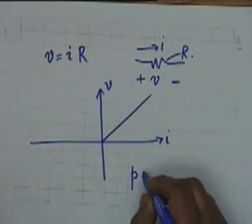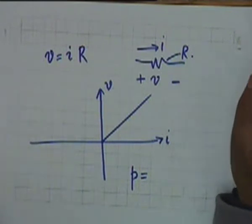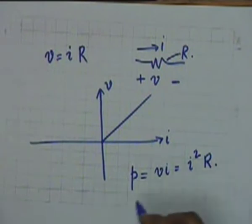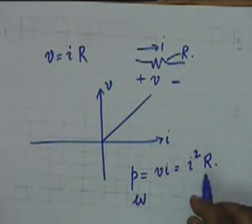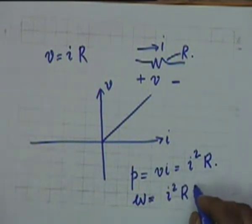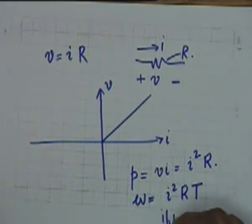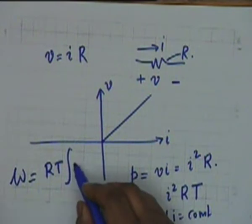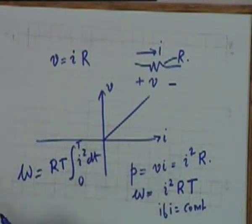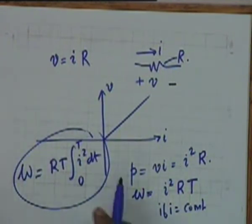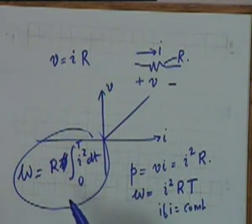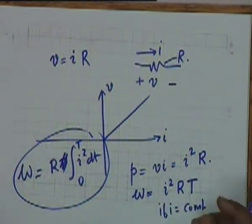In linear resistances, the power—that is, the energy consumed per unit time—dW/dt is given by the product VI, so P equals I²R. The energy dissipated in the resistance in time T shall be I²RT if the current is constant. If the current is not constant, then the energy is given by the integral of R·i² dt from 0 to T. This would be the general form.